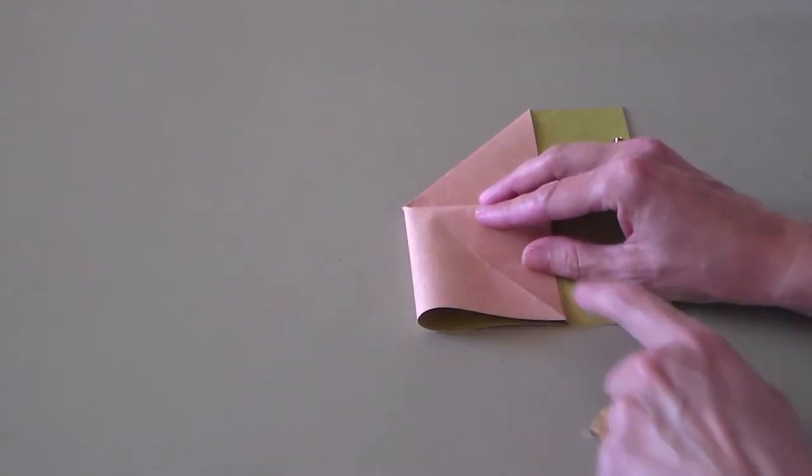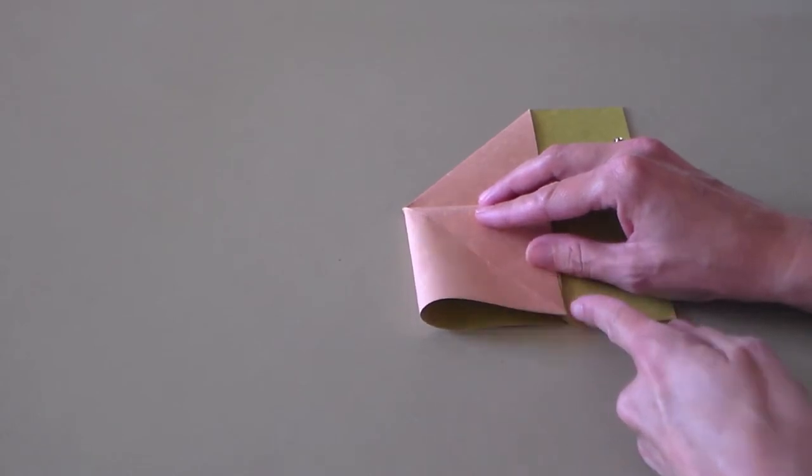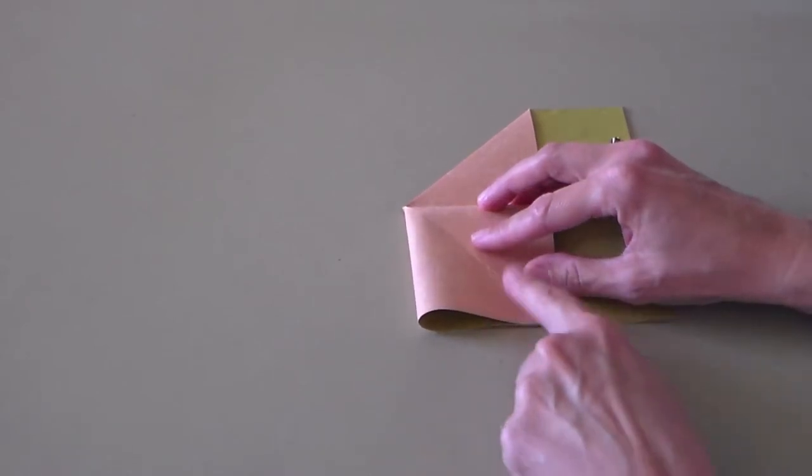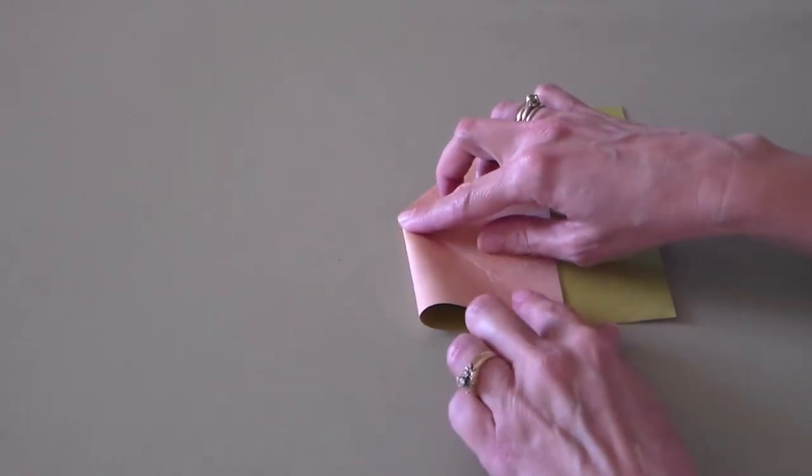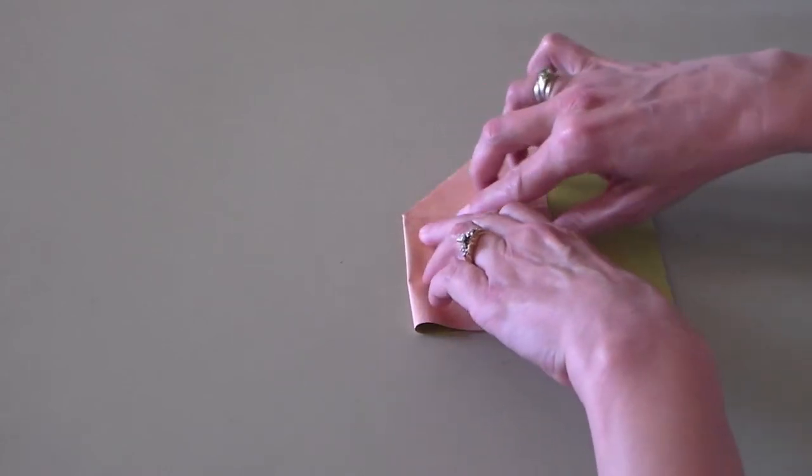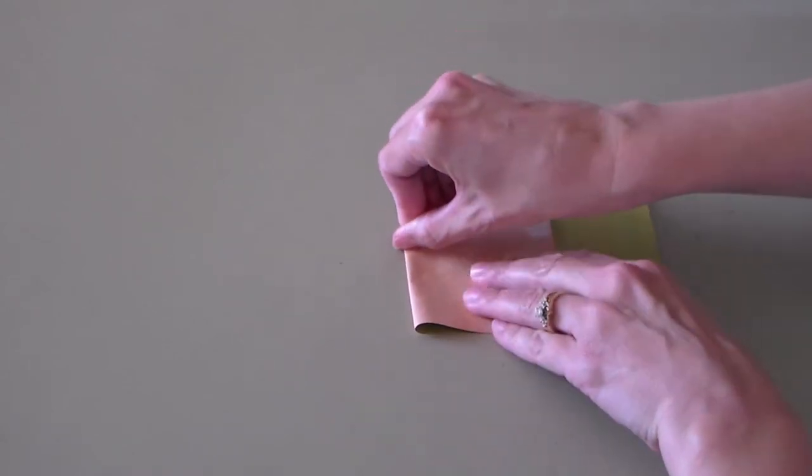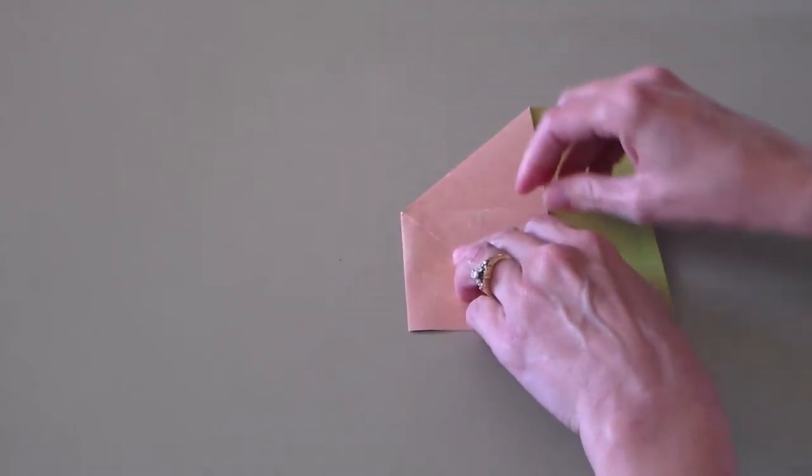And to make it neat, we're going to line up this center diagonal line with the fold underneath. And also the edges here and here will all line up. So once you've got all of that lined up, make these two folds here and here. Again, give it a good crease with the back of your thumbnail.